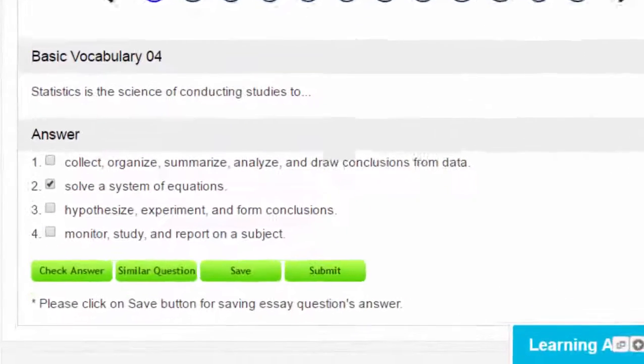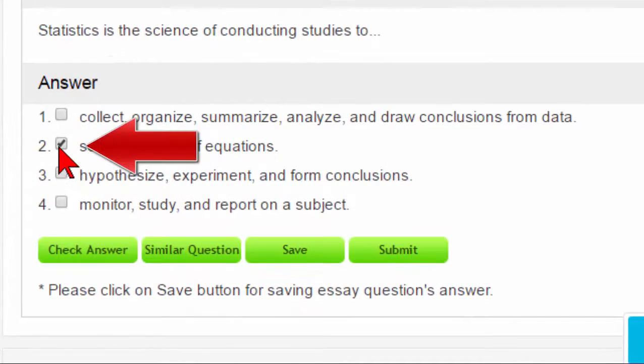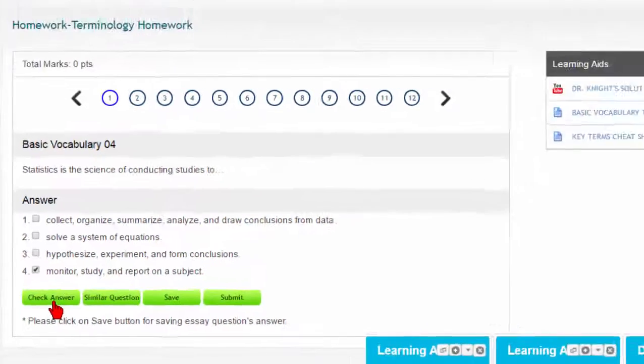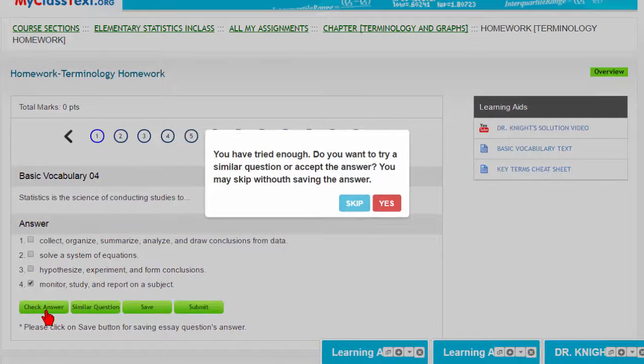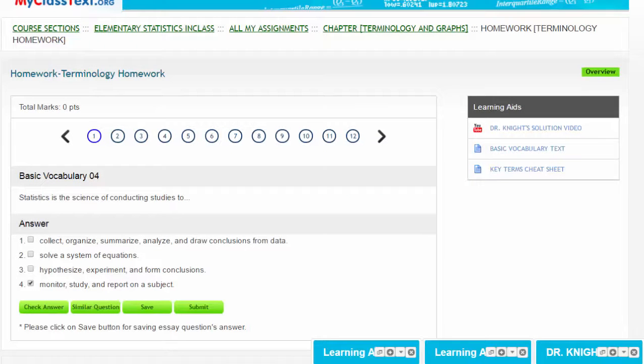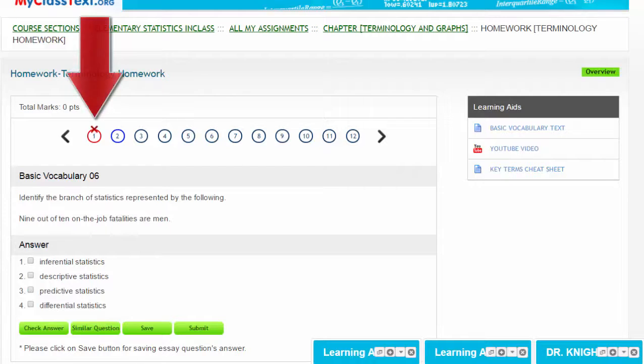When you re-attempt a problem, you should uncheck your first choice and then click your next attempt. We'll check again, and we see that this is also incorrect, but it tells us that we have tried this problem enough times, and if we now go to the next question, you'll notice that the first question is marked wrong.